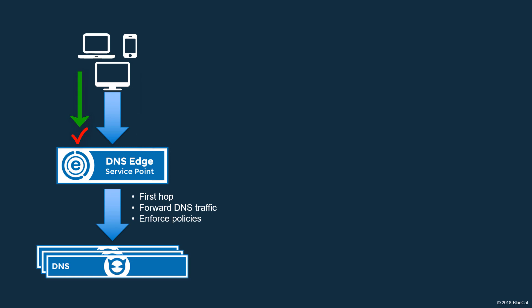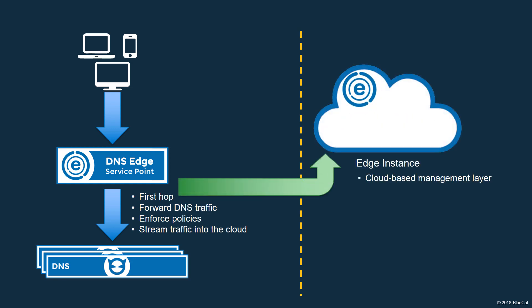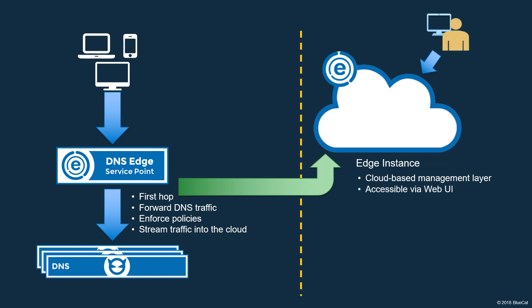If queries pass the policy evaluation process, they are then forwarded to the appropriate server in the organization's DNS infrastructure for resolution. In addition to applying policies and controlling traffic, Service Points deliver the DNS query data into the customer's Edge instance for analysis and storage. The Edge instance represents a cloud-based management layer and receives and hosts DNS data streamed by Service Points. DNS Edge users interact with the Edge instance via a web user interface. Queries from all Service Points are available for examination in the Edge instance. Data is analyzed in the Edge instance, and statistics are displayed on a dashboard, including the most frequently queried domains and queries per second for a given period.